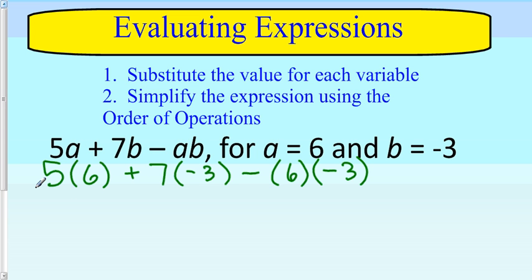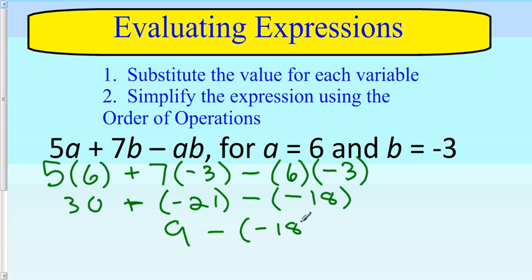Now I'll use the order of operations to simplify this expression. 5 times 6 is 30 plus negative 21. 7 times negative 3 is negative 21, minus 6 times negative 3 is negative 18. Continue simplifying: 30 plus negative 21 is 9. 9 minus negative 18 gives me positive 27.